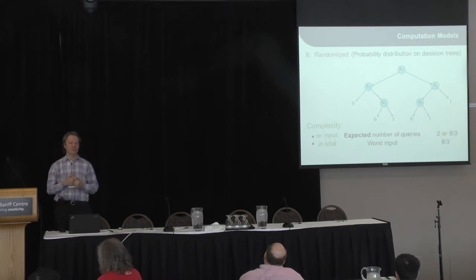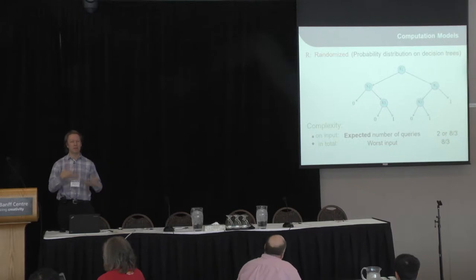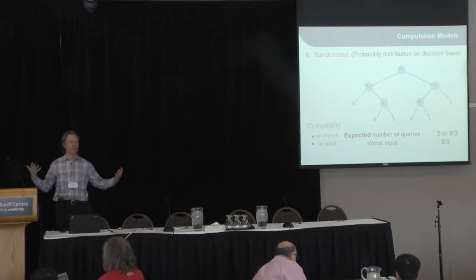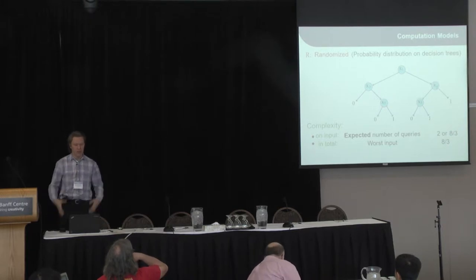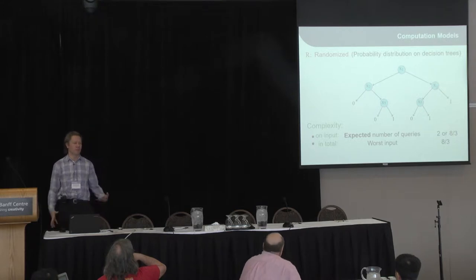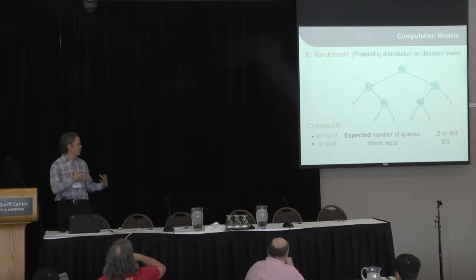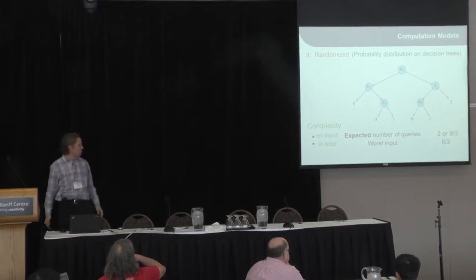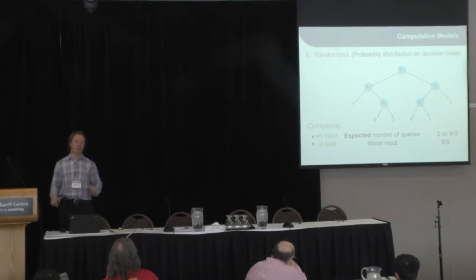If we think of probabilistic computation, a probabilistic algorithm essentially chooses one of several decision trees and makes queries according to it. On every input, we have the expected number of queries that the algorithm makes. The complexity of the algorithm is the expected number of queries for the worst possible input.